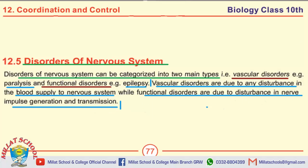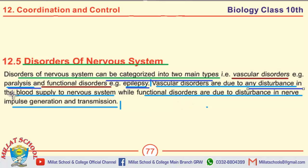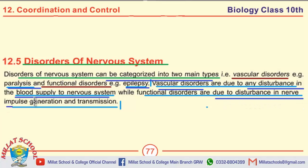Moving towards the important MCQs. The disorders of the nervous system can be categorized into two main types. Epilepsy is an example of functional disorder. The example of vascular disorder is paralysis. Any disturbance in blood supply to the nervous system is called a vascular disorder. If the disturbance occurs in nerve impulse generation and transmission, then it is a functional disorder.